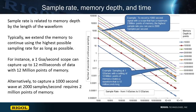Sample rate is the speed at which the voltage level of a signal is captured by the analog to digital converter inside the scope. Sample rate and memory depth in an oscilloscope are closely related to the length of the waveform in time you capture. The faster the sample rate, the shorter the captured wave is in time. The more memory you can utilize, the more time you can store.